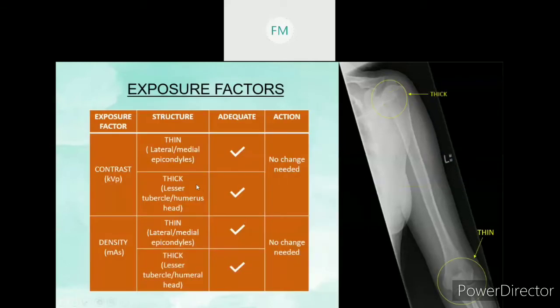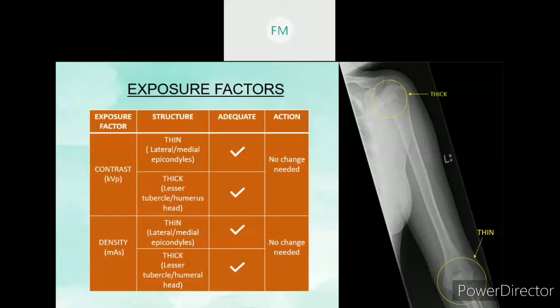For exposure factors: the contrast we want to see is the bony cortical outline for both thin and thick structures. For this AP humerus, the thin structure is the lateral and medial epicondyle, and the thick structure is the humeral shaft. The bony cortical outline of both thin and thick structures can be seen. Therefore, the contrast is adequate and the kVp is adequate. For density, we want to see the bony trabecular pattern of thin and thick structures — the lateral and medial epicondyle, and the lesser tuberosity or humeral head. Both thin and thick structures show visible trabecular pattern. Therefore, there is no mAs change needed. In conclusion, for exposure factors, no change is needed for either kVp or mAs.